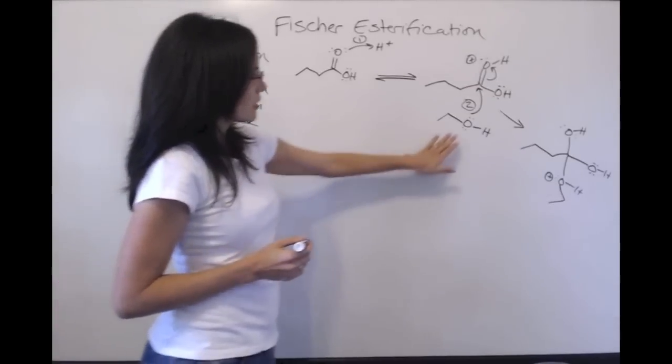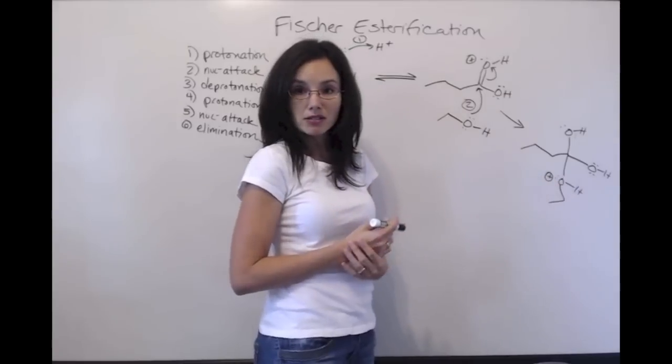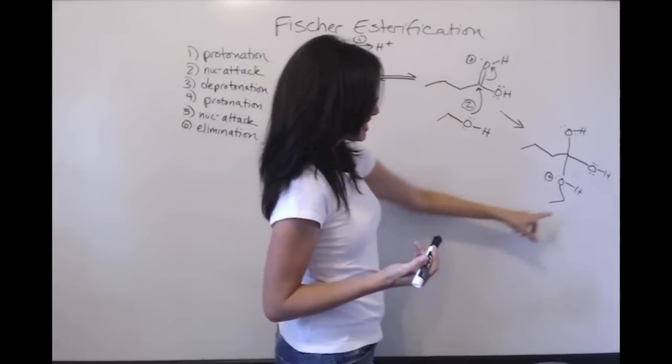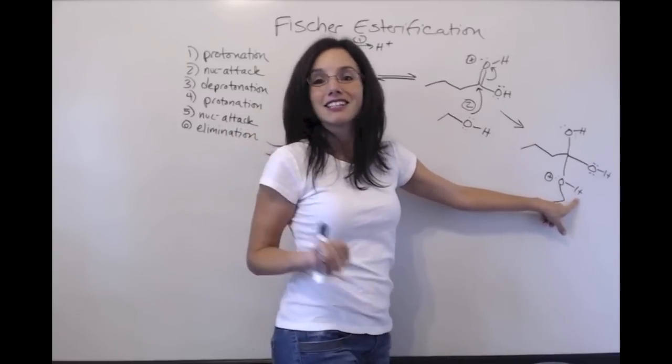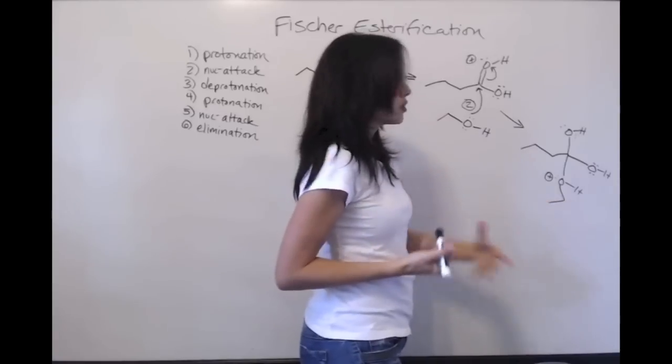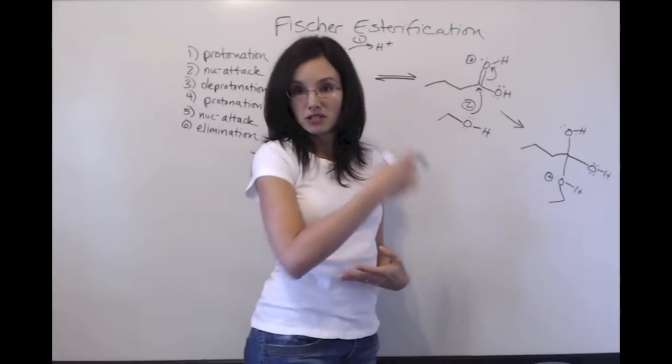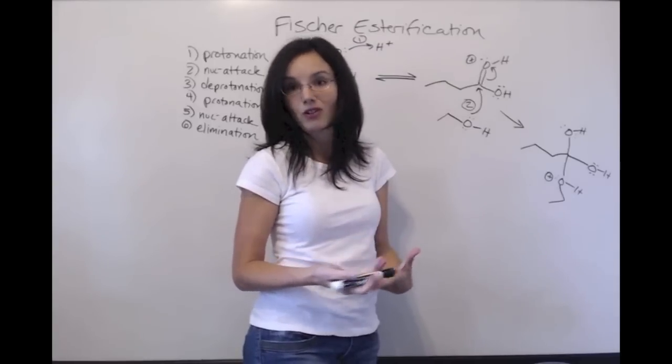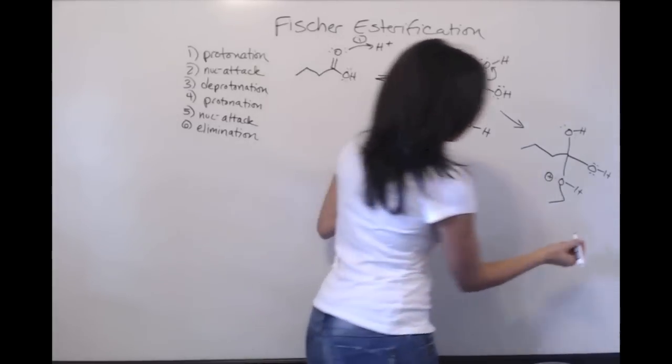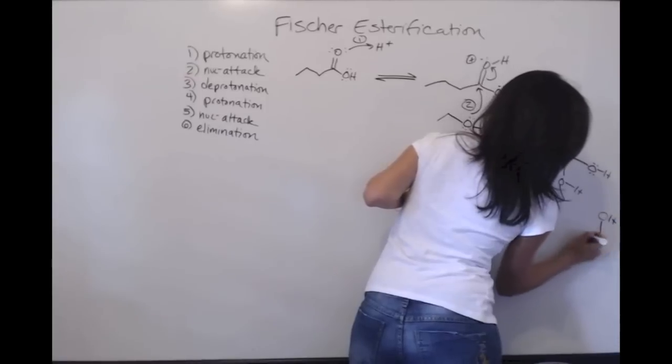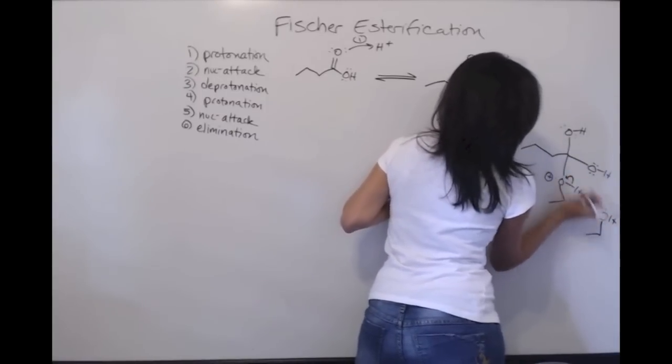You can see that our O used to be neutral with two bonds. Now it's positive with three bonds. And if we could just deprotonate it, it would be neutral again. That's where step three deprotonation comes in. So we just need a nucleophile from solution to come and deprotonate it. And the nucleophile that we have for this entire process is ethanol, or whatever alcohol you're using for your esterification. So I'm going to use another molecule of ethanol to come take this proton and put the electrons back onto the O.